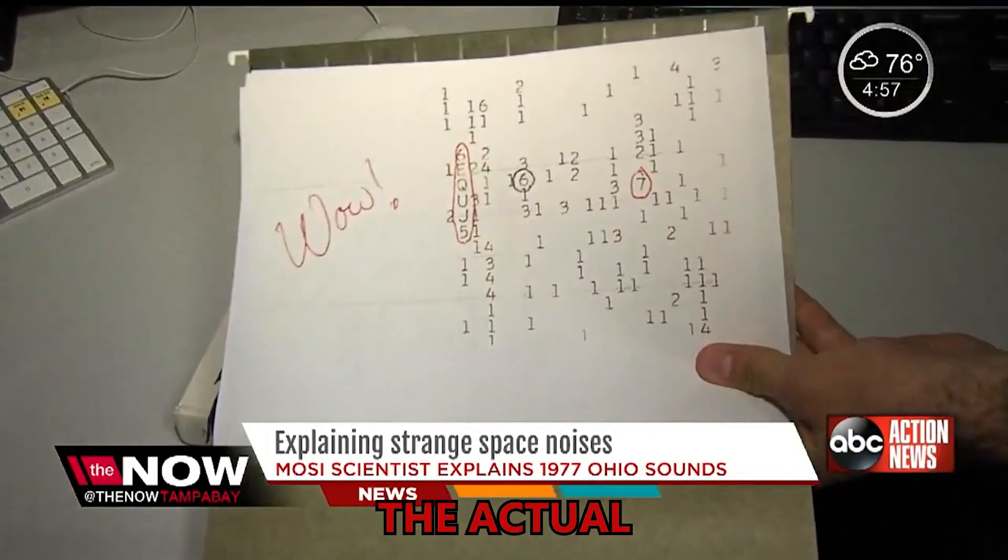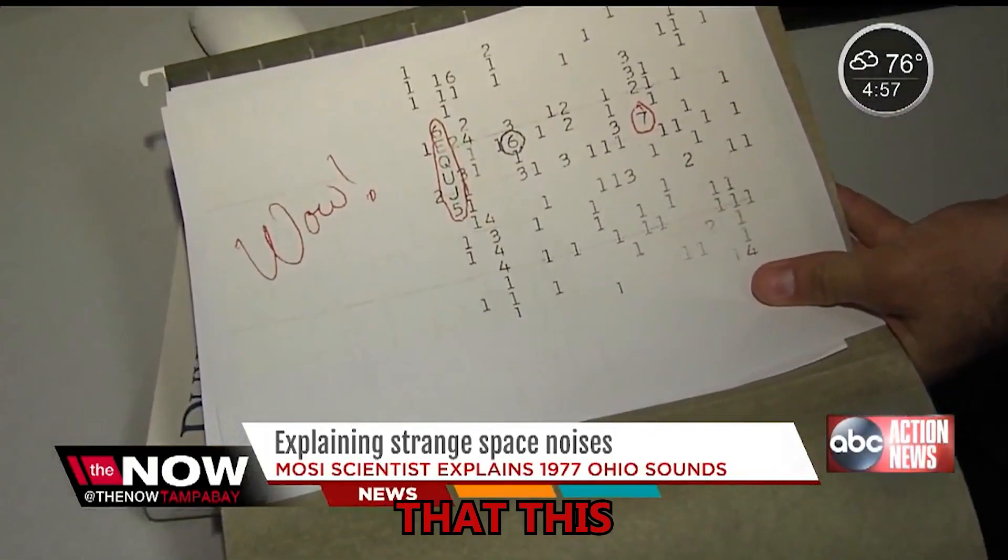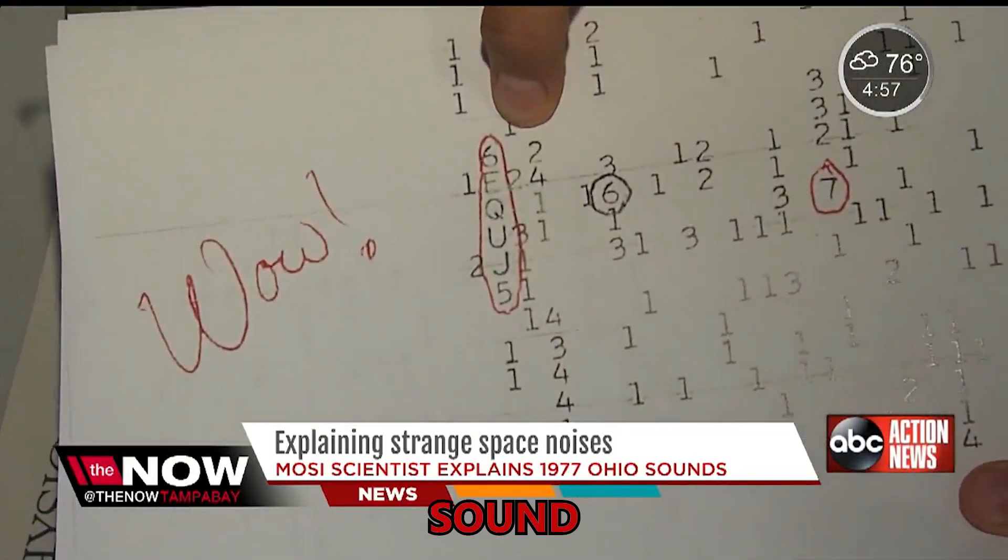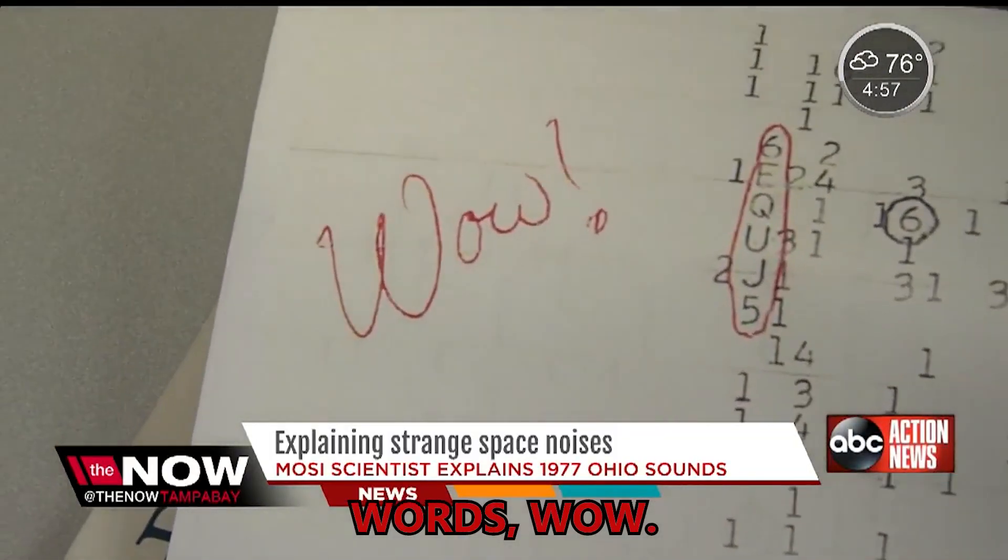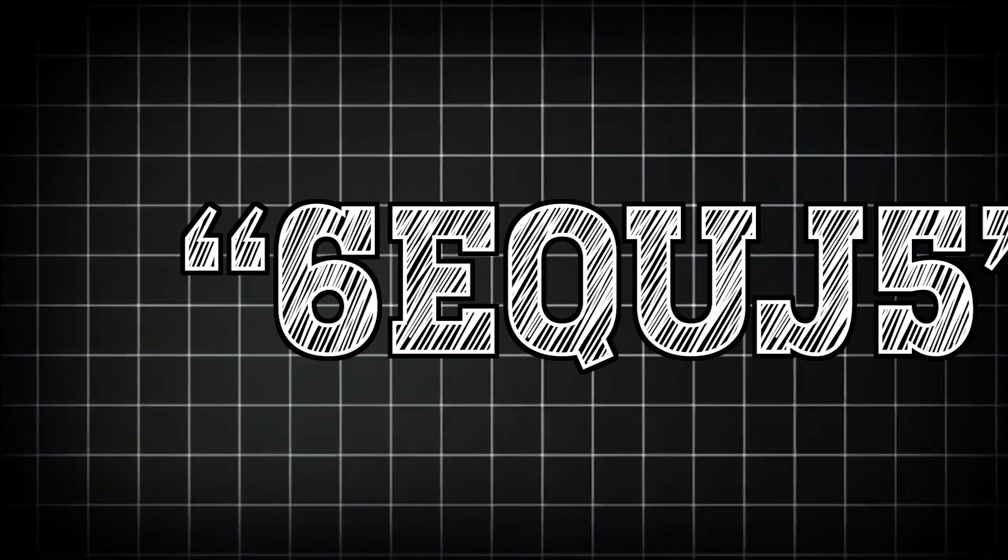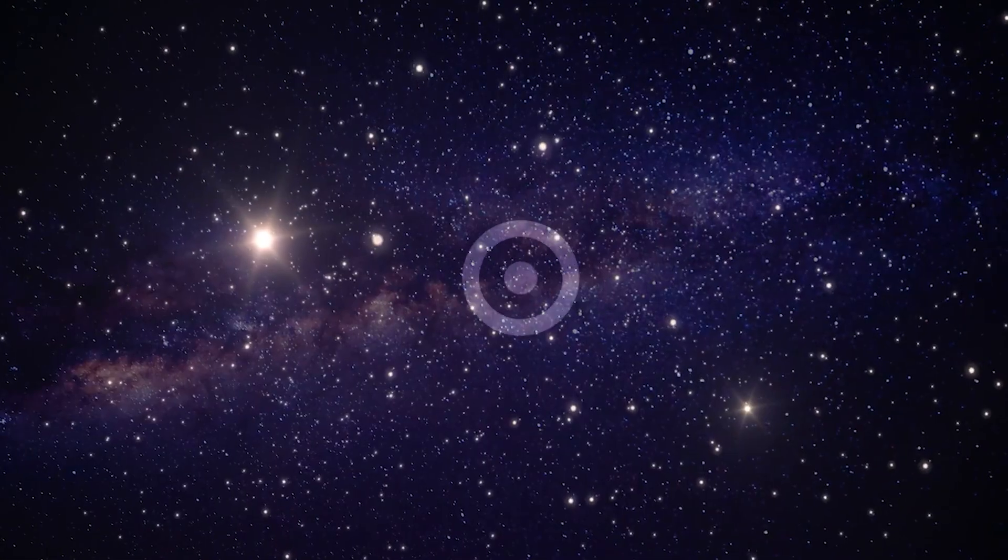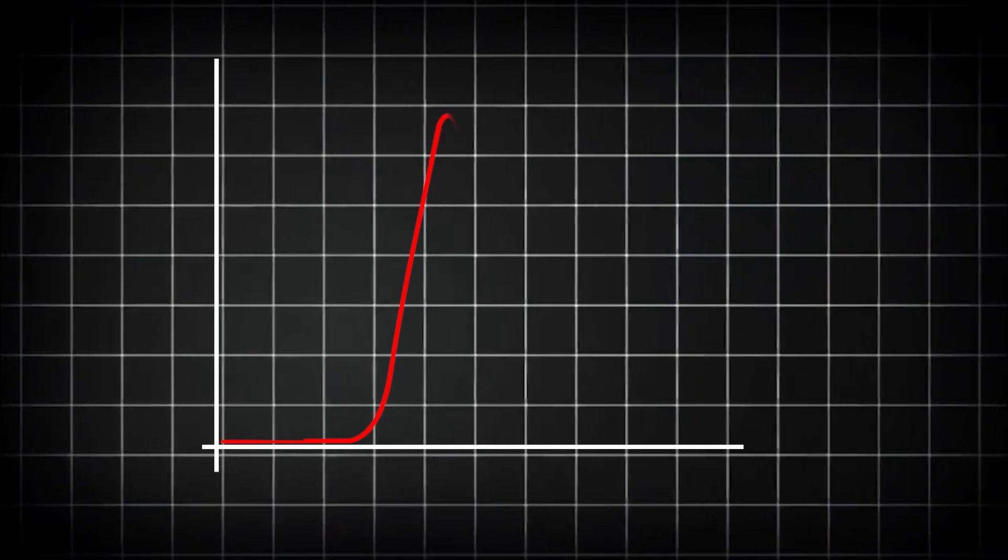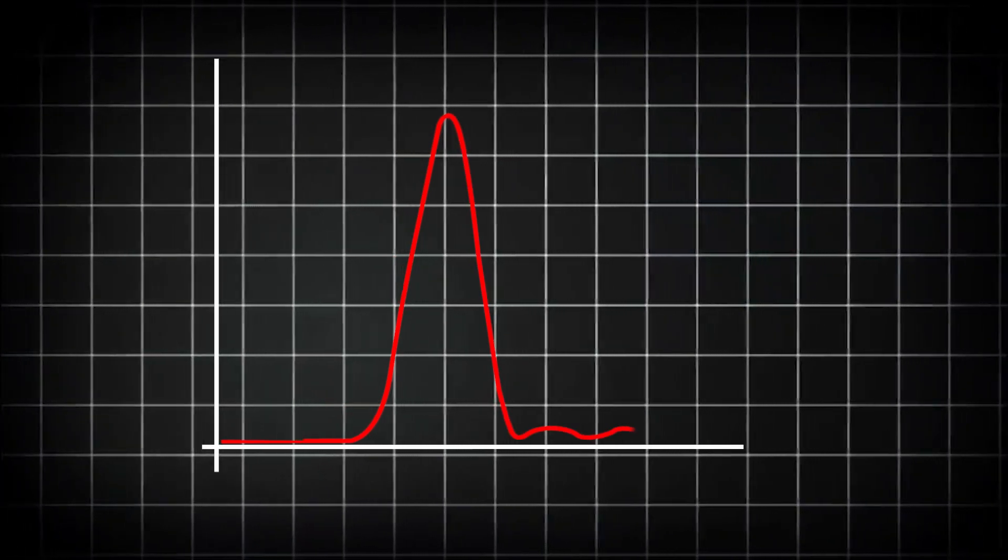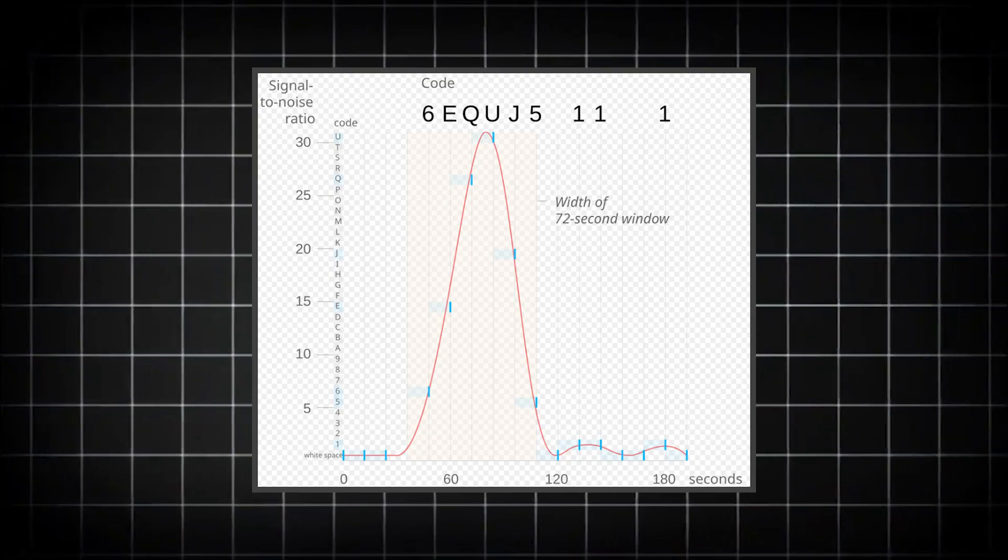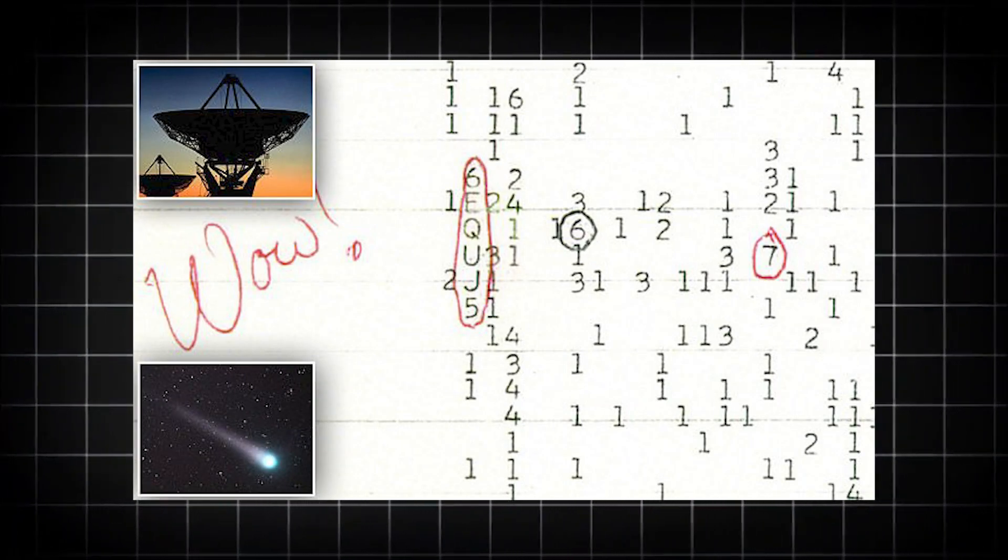Take a look at this. This is the actual, a copy of the actual notes that this astronomer made back then. You can see he circled the moment that the sound happened, even wrote the words. The sequence 6EQUJ5 wasn't just some random message. It was all about the intensity. The signal they received shot up, hit its peak, and then faded away, perfectly synced with the telescope's movement. It felt way too clean, way too specific, and way too deliberate.